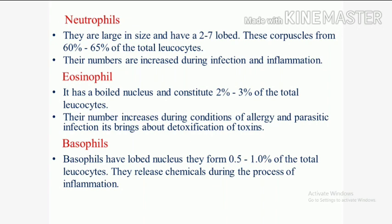The second type is eosinophils. They have a bi-lobed nucleus and constitute 2% to 3% of the total leukocytes. Their numbers increase during conditions of allergy and parasitic infections, and they bring about detoxification of toxins. Allergy types include food allergy, drug allergy, medicine allergy, and insect bites.